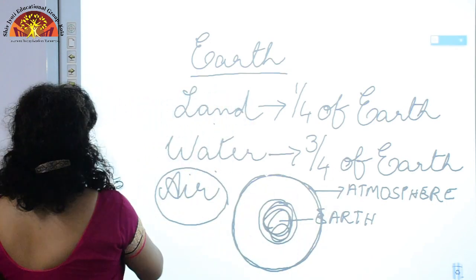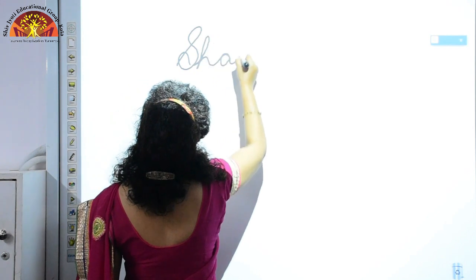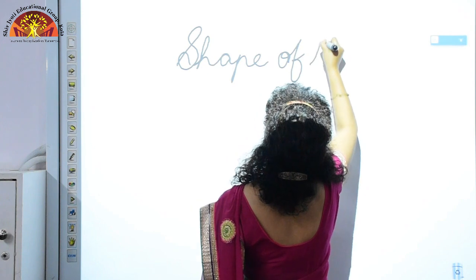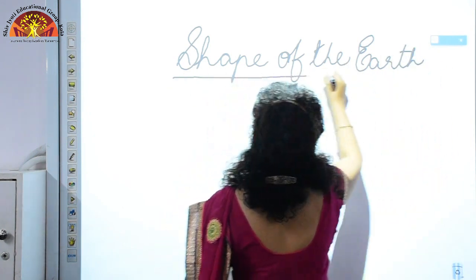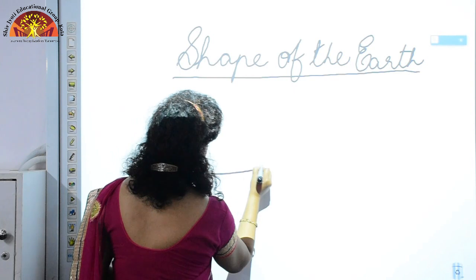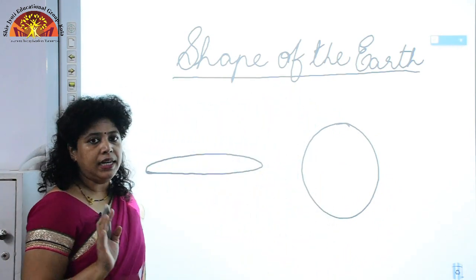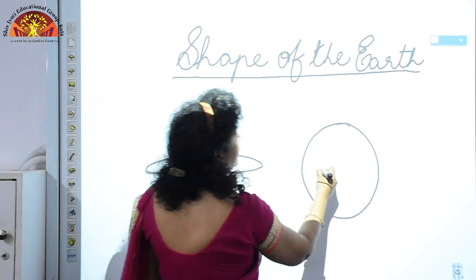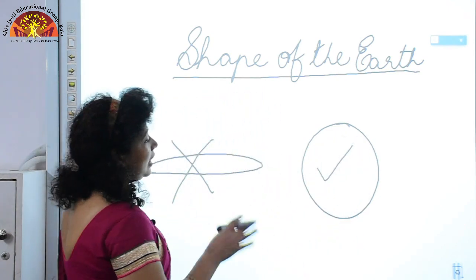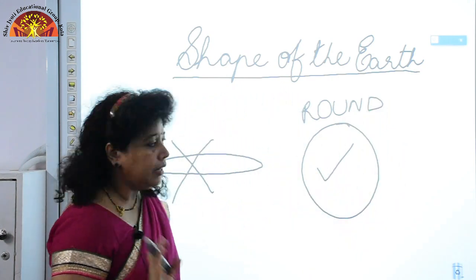Now let us come to the shape of the Earth. Hundreds of years ago, people thought that the Earth was flat in shape. But actually it is round in shape. A man named Ferdinand Magellan, who was a Portuguese sailor, proved that the Earth was not flat — it is actually round. The astronauts also proved that the Earth was round in shape. So the shape of the Earth is round.